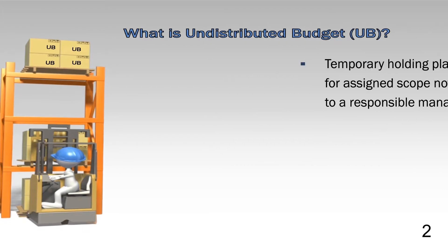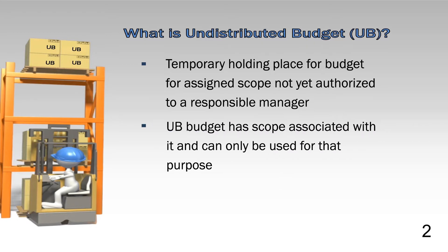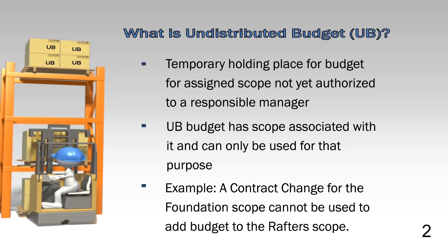Undistributed Budget is a temporary holding account for contract scope and associated budget that is not yet authorized to control accounts, Summary Level Planning Packages, or SLPPs, or MR. UB always has scope associated with it, and the budget can only be used for that purpose. For example, if a contract change was awarded for a foundation change, that budget cannot be used to build the rafters.